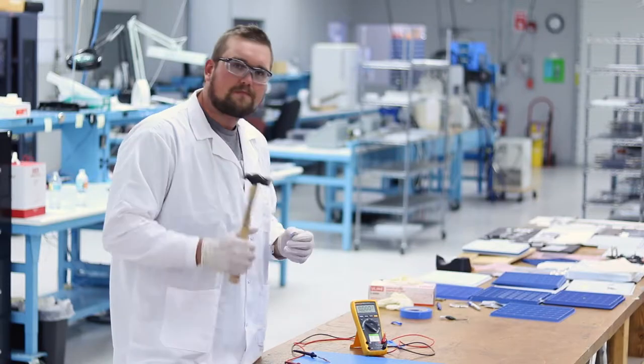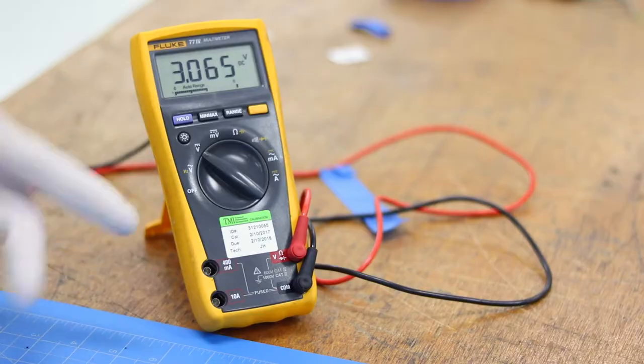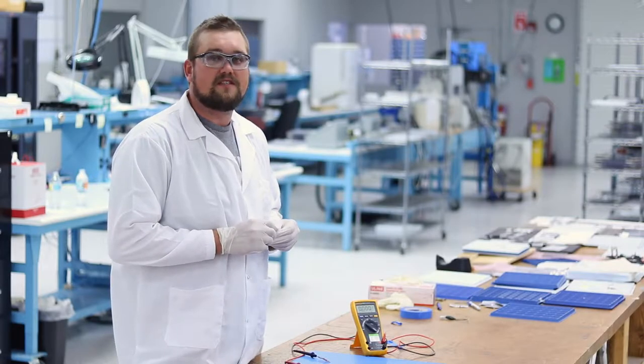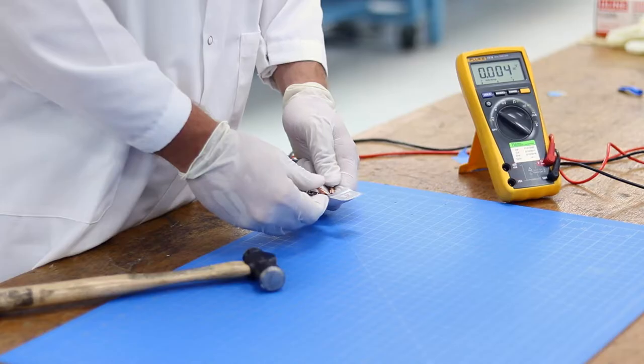We're going to be hitting them with a hammer while hooked to the voltmeter here, and our hypothesis is that you will see zero change in the voltage when this battery is put under pressure.